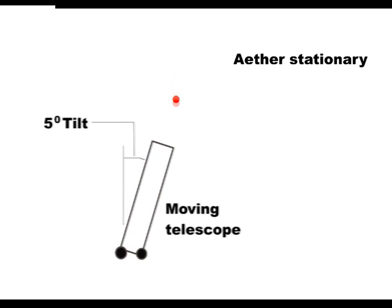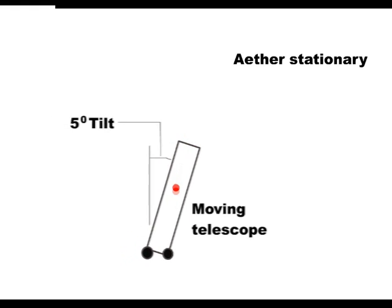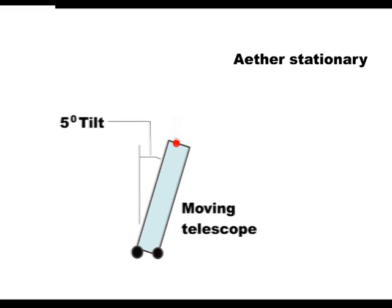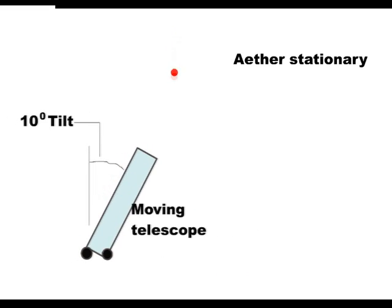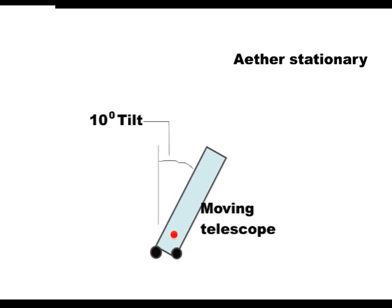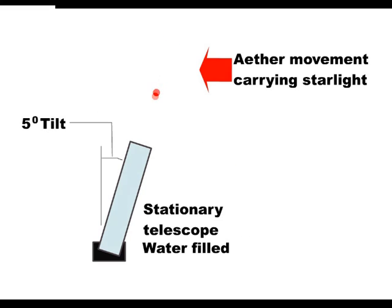To recap, if it is the telescope that is moving, then when it is filled with water it has to be tipped further to see the star. If the telescope is stationary and the starlight drifting past us, then it does not have to be tipped further.